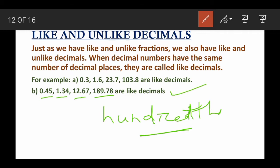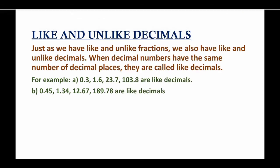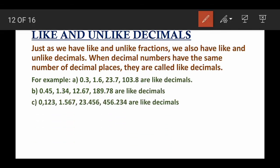Here is one more example: 0.123, 1.567, 23.456, and 456.234. In all these cases there are three digits after the decimal point, up to the thousandths place. So you can say that all these are like decimals.